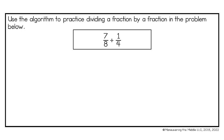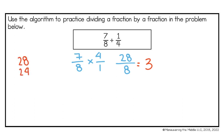Now I have 7 eighths divided by 1 fourth. I keep my first fraction, change my symbol, and flip my second fraction. 7 times 4 is 28, and 8 times 1 is 8. This is an improper fraction, so I want to turn it into a mixed number. 8 goes into 28 three times, because 8 times 3 is 24. 28 minus 24 is 4, so that becomes 3 and 4 eighths. Simplifying by dividing top and bottom by 4, my final answer is 3 and 1 half.